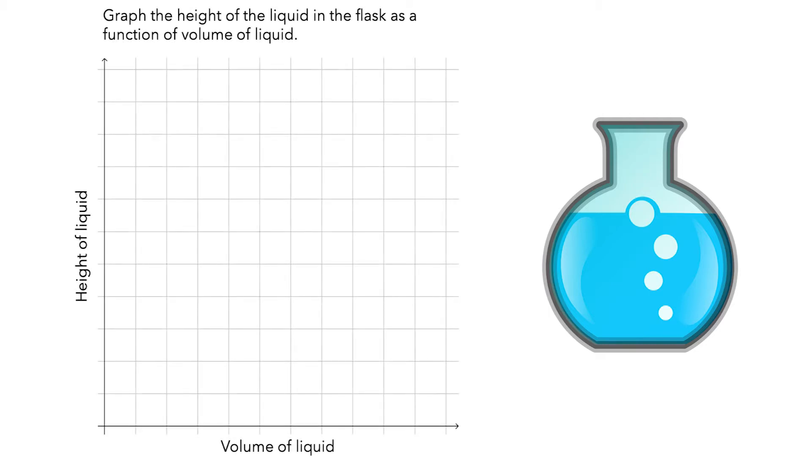In this video, you will see Julian and Alyssa thinking about filling a flask with water and trying to graph the height of the liquid in the flask as a function of the volume of the liquid that is added to the flask. As they work on the problem, consider the understandings they express and determine if their reasoning is valid.